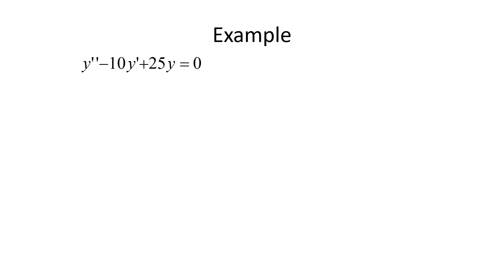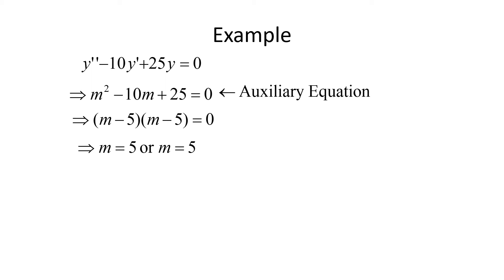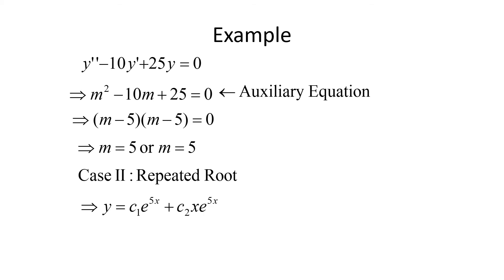Let's do a few examples. Our first example is to solve y double prime minus 10y prime plus 25y equals 0. We start by forming our auxiliary equation, replacing y's with m's and derivatives becoming powers: m squared minus 10m plus 25 equals 0. We factor this as m minus 5 times m minus 5 equals 0, giving m equals 5 or m equals 5 — two repeated roots. This is a case 2 problem, so our solution is y equals c1 e to the 5x plus c2 x e to the 5x.